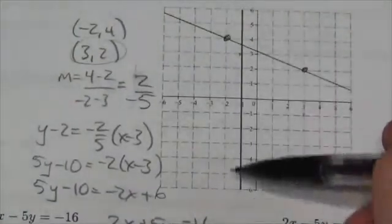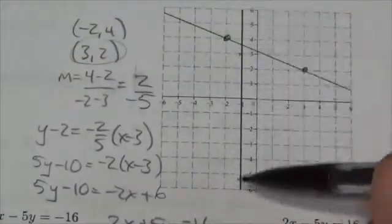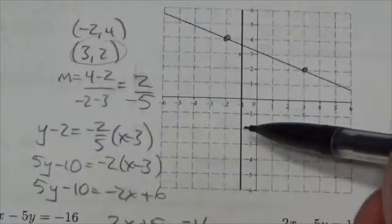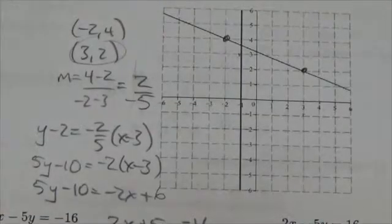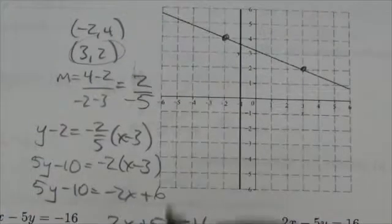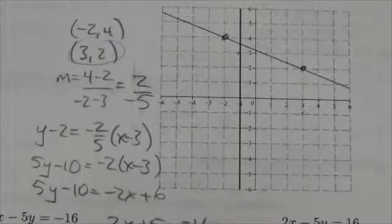This second line might be even more interesting. This might even directly tell me what the system is that I'm looking for. This is a vertical line, so it's just going to be x equals...